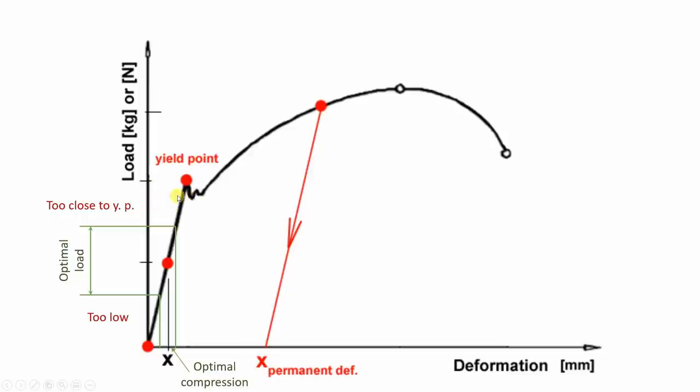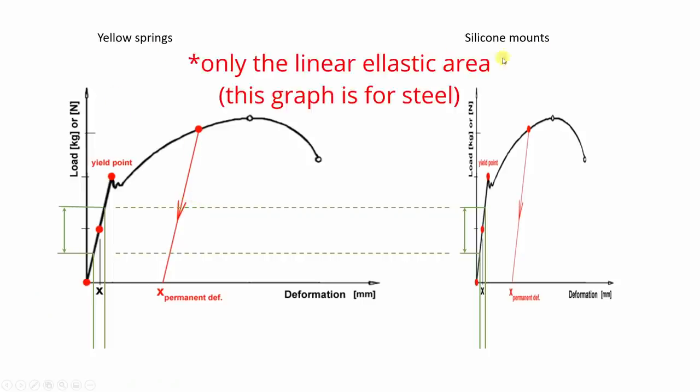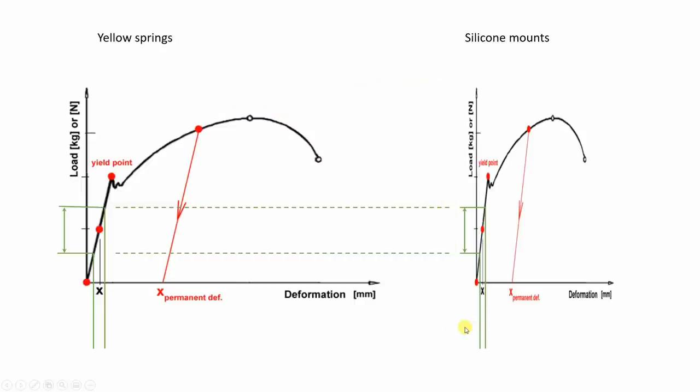Now I believe the graphs for the yellow springs and silicone mounts look something like this. On the same or similar load, the deformation of the silicone mounts is much smaller. This is better for permanent mounting of the bed, but it's a little bit harder to get the Z limit switch to trigger exactly here. With the yellow springs this will be much wider and it's much easier to set the position of that Z limit switch, but with the BL Touch we don't have that problem.